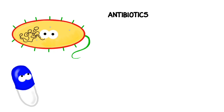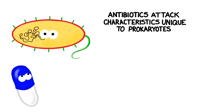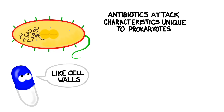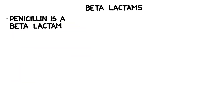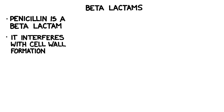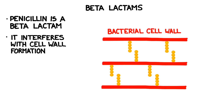Antibiotics work by attacking characteristics that prokaryotic bacterial cells have, but eukaryotic human cells do not. Penicillin is one of the most famous antibiotics. It's known as a beta-lactam, which is a class of antibiotics that attack bacterial cell walls. Since humans do not have cell walls, penicillin is harmless to them but toxic to the prokaryotic bacteria.